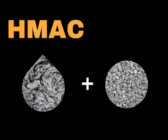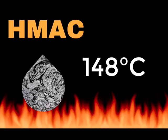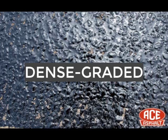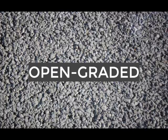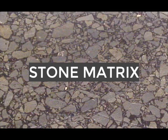HMAC is composed of heated asphalt cement mixed with aggregates at 148 degrees Celsius. HMAC can be classified into different types of aggregate mixes: dense graded, open graded, and stone matrix.